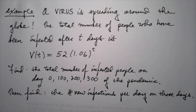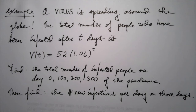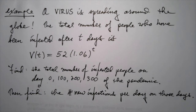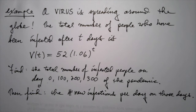Let's do a real-world application of exponential functions. A virus is spreading around the globe. The total number of people infected after t days is given by v(t) = 52 times 1.06 to the t. We'll find the total number of infected people on days 0, 100, 200, and 300 of the pandemic, and then find the number of new infections per day on those days.